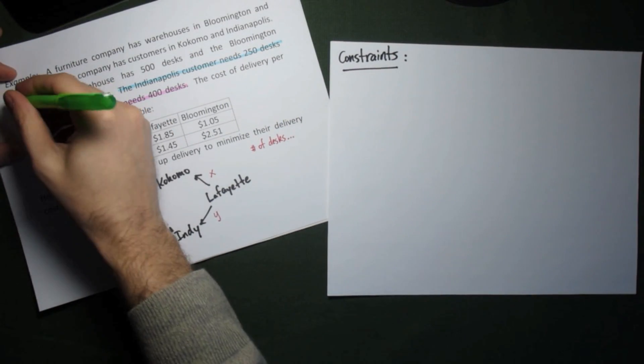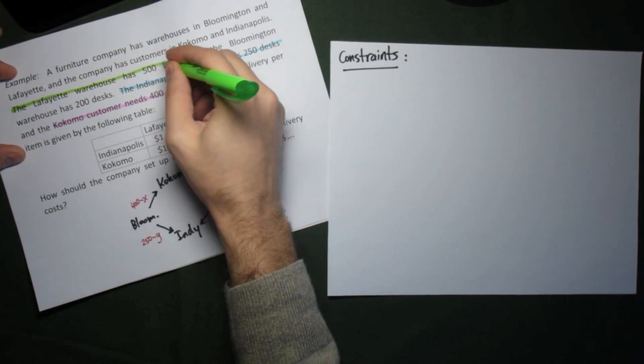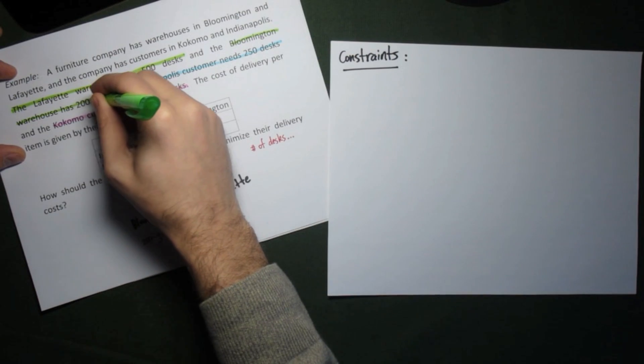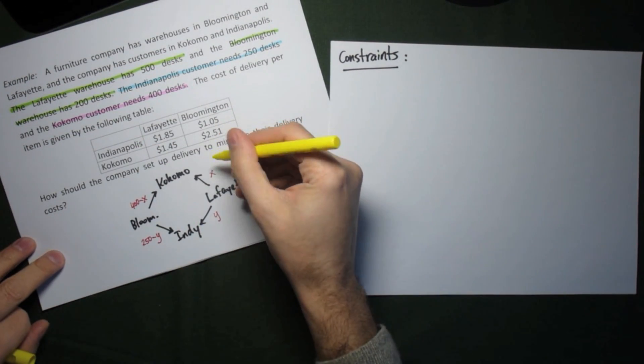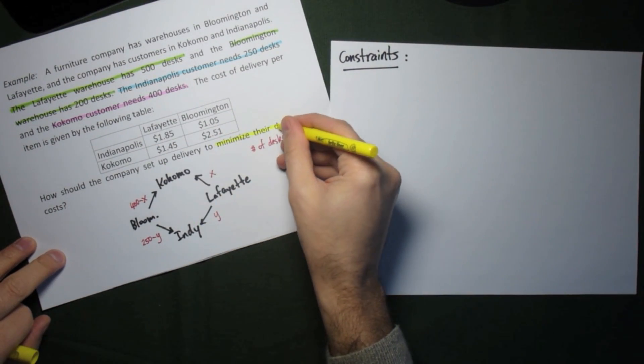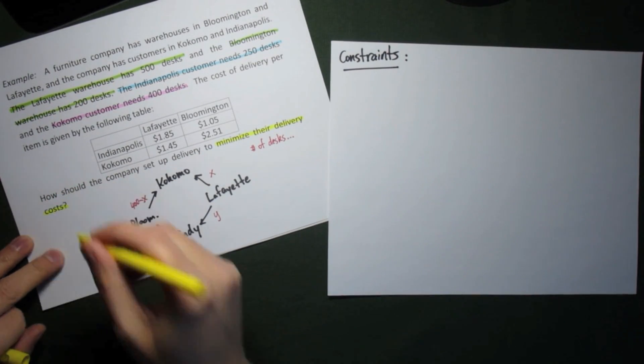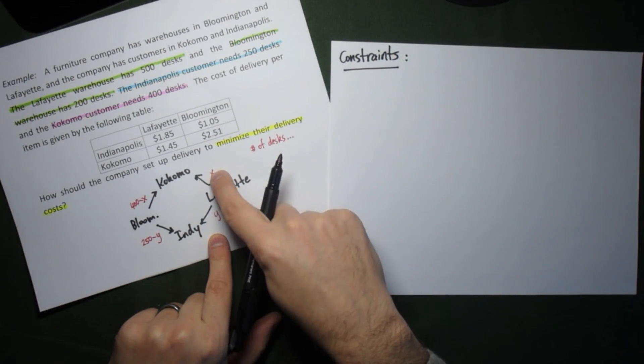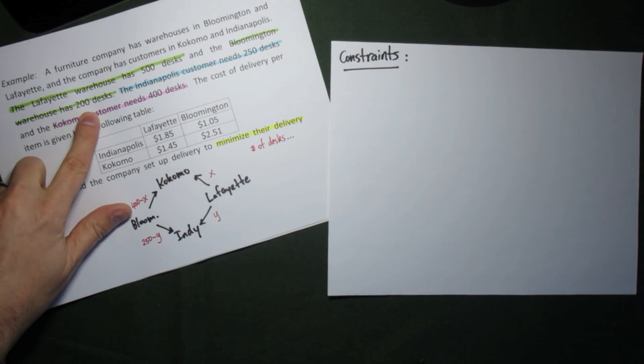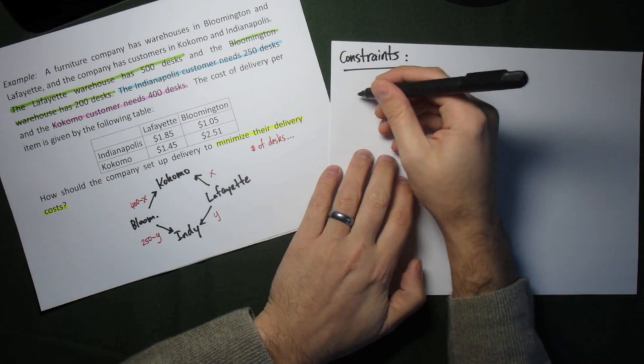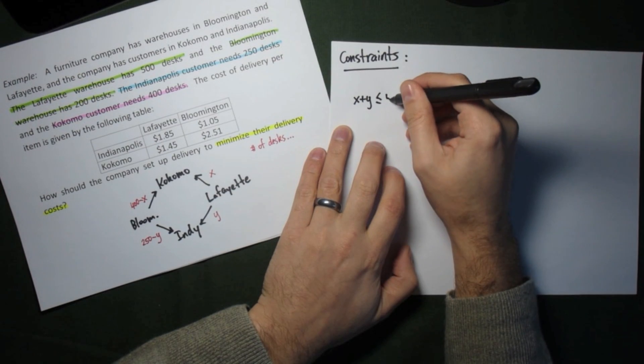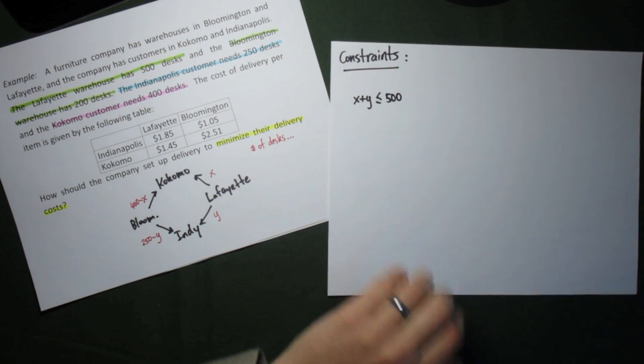To set up our constraints, we take a look to see what different things the problems tell us. We know that the Lafayette warehouse has 500 desks and the Bloomington warehouse has 200 desks. We also know that we want to minimize the delivery costs. This part will give us our objective function. And so we begin by looking at each of the deliveries and seeing what constraints we have on them. Because the Lafayette warehouse has 500 desks, we know the total number of desks shipped out of Lafayette can be no more than 500. In other words, x plus y has to be less than or equal to 500.